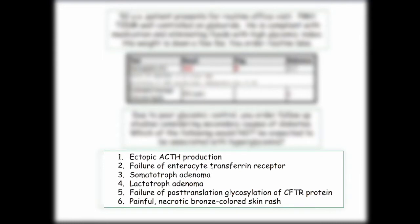Failure of enterocyte transferrin receptor — that's hemochromatosis. Failure of transferrin receptor damages the pancreas and you can get diabetes. So for secondary diabetes, I do get iron studies.